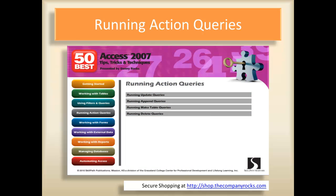Running action queries: you can use an update query when, for example, you want to adjust your prices or you want to adjust your restocking levels. An action query can also make a new table from an existing table or query based upon specific criteria. This is a great way for you to send information from Access to a colleague who is using Microsoft Excel.